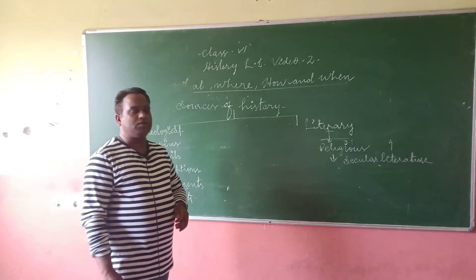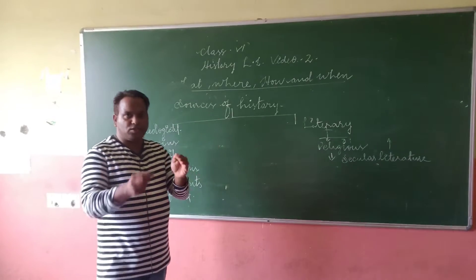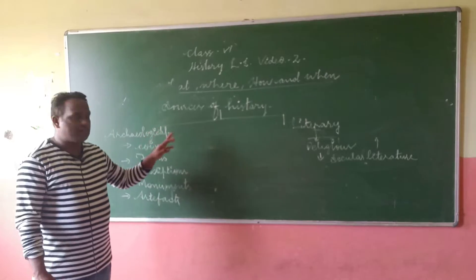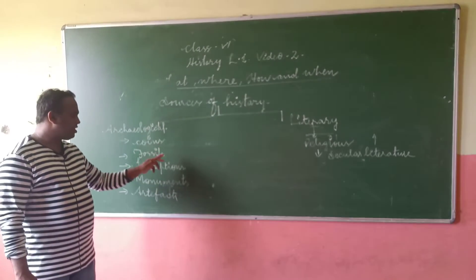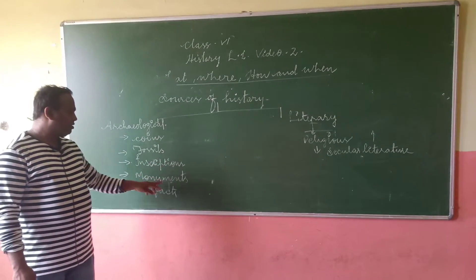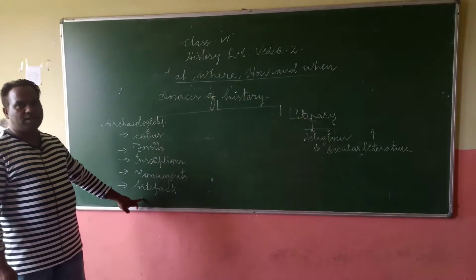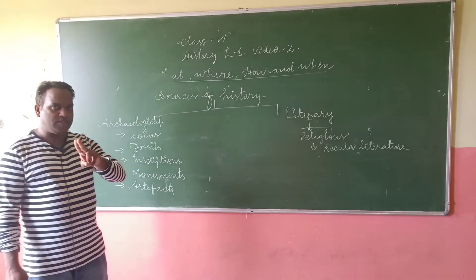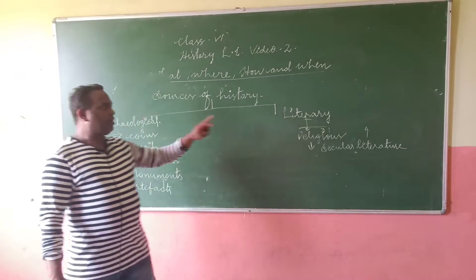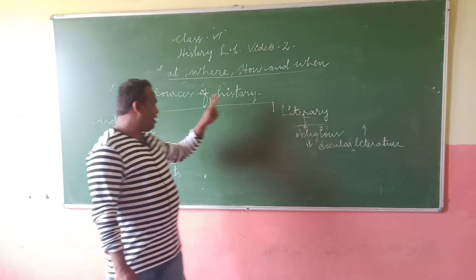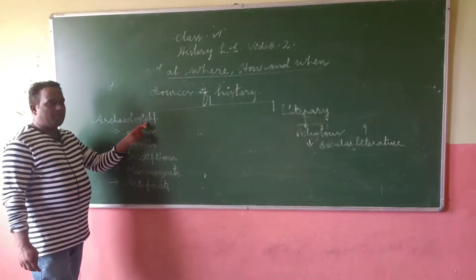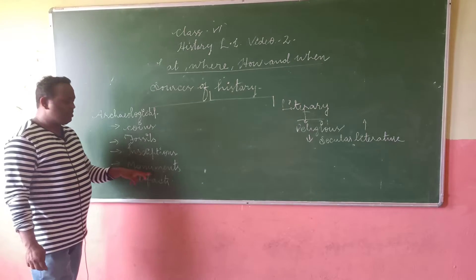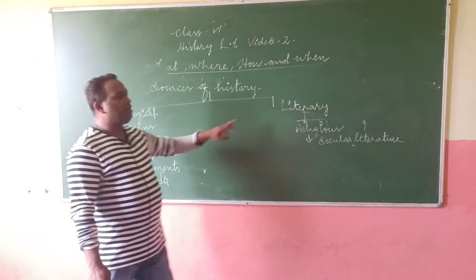Next, we are going to the sources of history. There are two types of sources of history: archaeological and literary. Archaeological sources include coins, fossils, inscriptions, monuments, and artifacts.